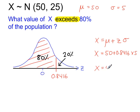So x is equal to 54.2. So this value of x exceeds 80% of the population.